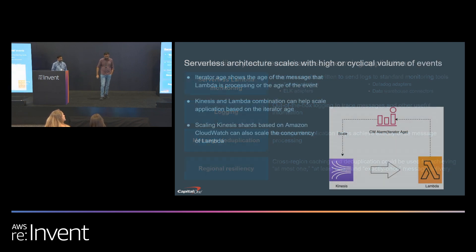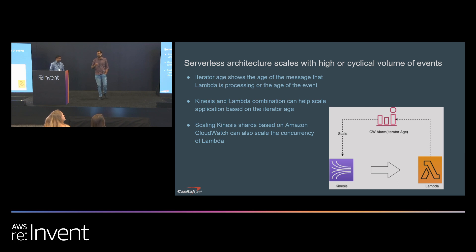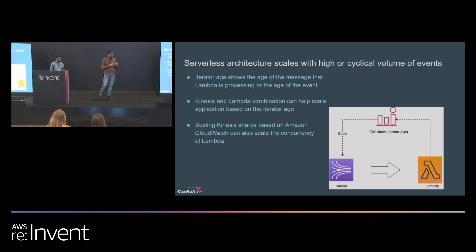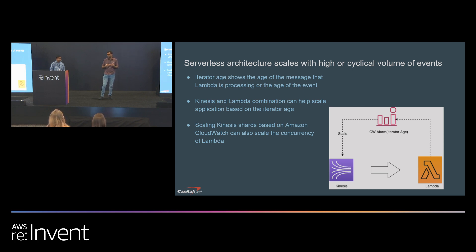Now let's talk about scaling. Fundamentally, scaling means: when you have a spike in load, how do you provide more resources? With Kinesis and Lambda, the key is identifying how many messages are in Kinesis so you can scale up or down. A very powerful feature when you connect Kinesis to Lambda is a metric called iterator age — it shows how old the message you're processing is, representing the depth of the queue. Based on a CloudWatch alarm on that metric, you can scale Kinesis, which in turn scales your Lambda.